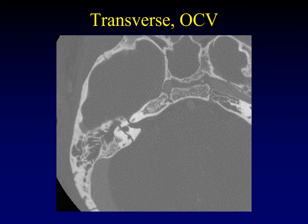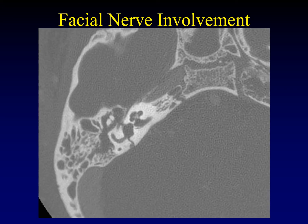Here's a transverse fracture running perpendicular to the axis of the petrous bone and right through the otic capsule. Here's the vestibule and some semicircular canals, blatantly disrupted by a displaced fracture running through the otic capsule — this is an otic capsule violating fracture in transverse orientation. Don't forget that transverse fractures, just like their longitudinal counterparts, can involve the facial nerve — typically the tympanic segment rather than the geniculate ganglion. They can violate the otic capsule while also running through the fallopian canal and disrupting the facial nerve.